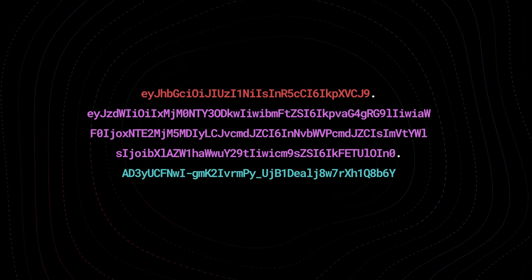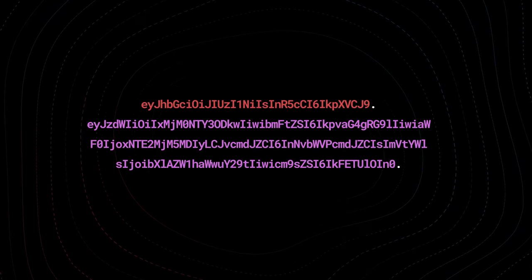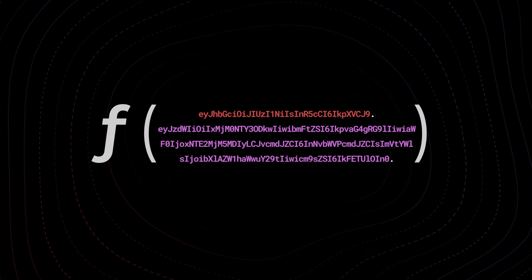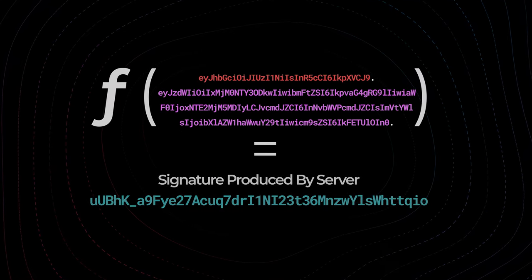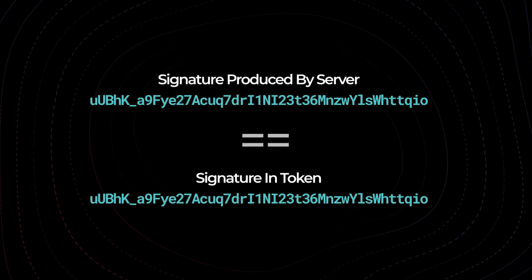That signature is included in the token itself. Now for the really important part: how does authorization work? How do we verify the signature of a JSON web token? When you send a token to a server, it will take the header and the payload and run it through the exact same hashing algorithm to produce a signature.